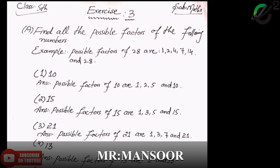Find all the possible factors of the following. Example 1: possible factors of 28 are 1, 2, 4, 7, 14 and 28.